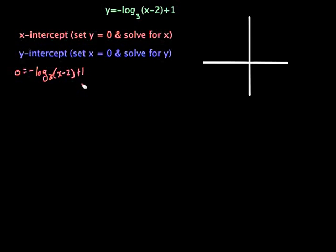And now we want to get the log alone, so I'm going to subtract 1 from both sides so that we get negative 1 is equal to negative log base 3 of x minus 2. Next, we're going to want to get rid of this negative in the front, so we're dividing both sides by negative 1. So 1 equals log base 3 of x minus 2.